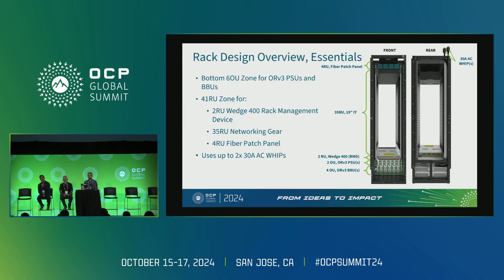Here are the rack commons for ORV3N. We have two zones: the bottom 6 OU (open unit) is for the power zone, and above that are 41 RU (rack unit) for network gear. In the bottom 6 OU, 4 OU are dedicated for BBU — battery backup unit or hold-up energy — and above it are two OU dedicated for power shelves. In the 41 RU, the bottom-most 2 RU are for metal application using a Wedge 400 for rack management device. The uppermost 4 RU is a fiber patch panel, where fibers come in from the switches and fibers from the job plug into the front. The remaining 35 RU are free to deploy your network gear.